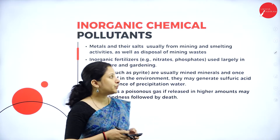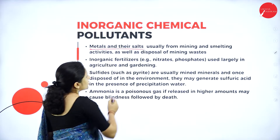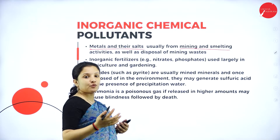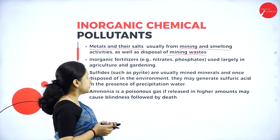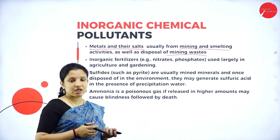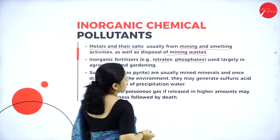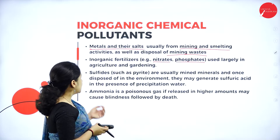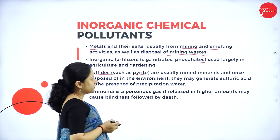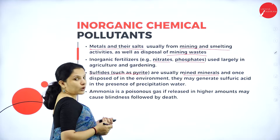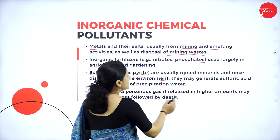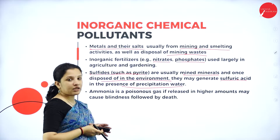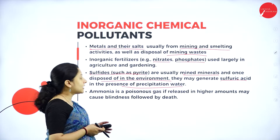Talking about inorganic chemical pollutants: there are metals and their salts usually obtained during mining and smelting processes which, if not disposed properly, can cause chemical pollution. Inorganic fertilizers such as NPK — nitrogen, phosphorus, potassium — including nitrates and phosphates used in gardening and agriculture, also cause chemical pollution. Some sulphites, especially pyrite which is a mined mineral, when disposed into the environment, generate sulphuric acid in the presence of water, which has a deleterious effect on the environment.